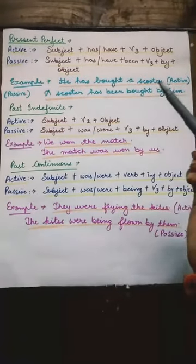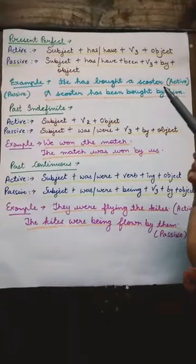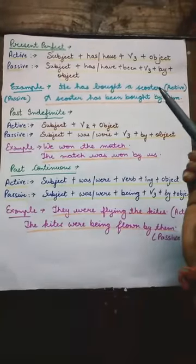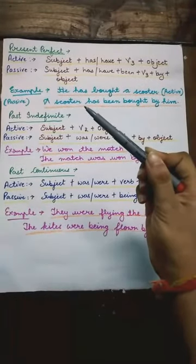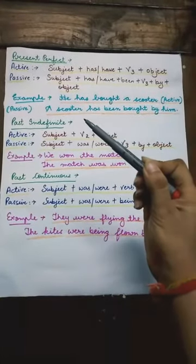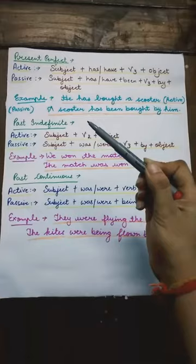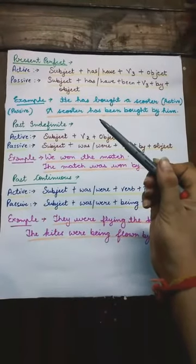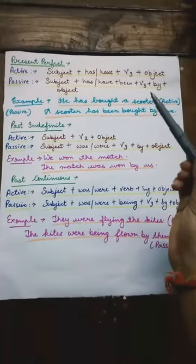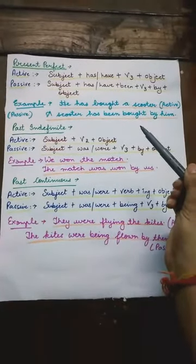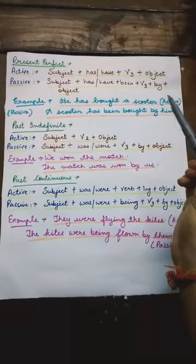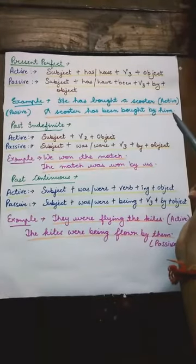Example: 'He has bought a scooter.' जब sentence को active से passive में change किया गया: object 'a scooter' को subject की place पे लिख दिया गया. After that, 'has' लिखा गया according to the subject — क्यूंकि subject singular है. Then 'been' लिखा गया. Then verb की third form 'bought'. After that 'by', and at last He changes into him. So the sentence will be: 'A scooter has been bought by him.'